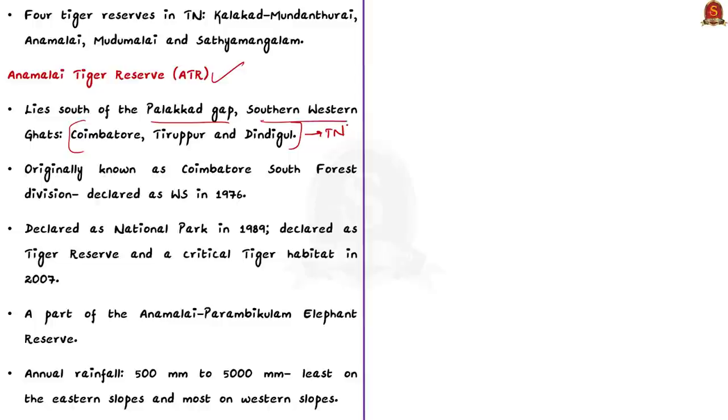The Anamalai Tiger Reserve was originally a territorial division known as Coimbatore South Forest Division, declared as a Wildlife Sanctuary in 1976. A part of it was declared as a National Park in 1989. This Wildlife Sanctuary was declared as Tiger Reserve under Critical Tiger Habitat in 2007. Also know that Anamalai Tiger Reserve forms part of Anamalai-Parambikulam Elephant Reserve.